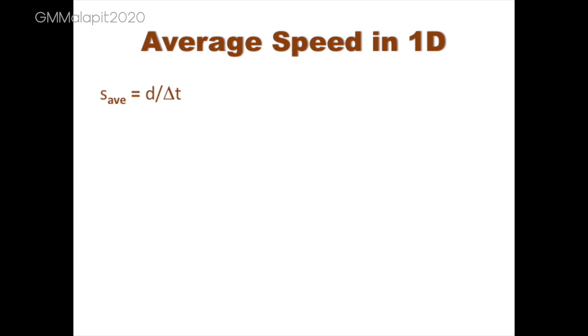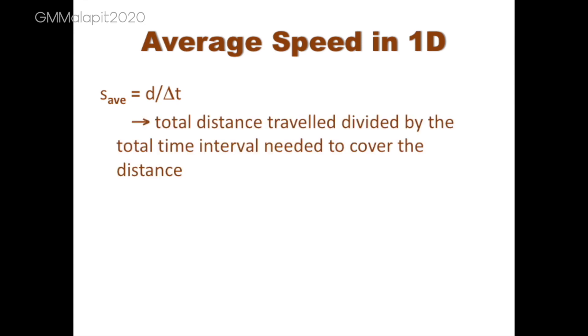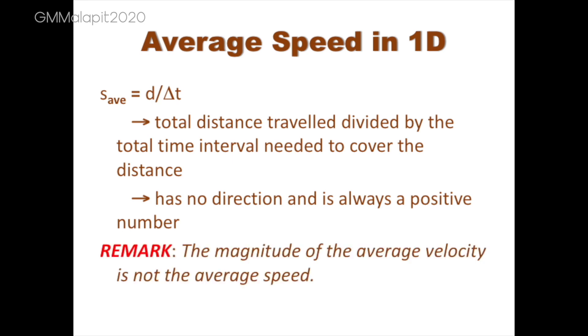The average speed is defined as the total distance traveled divided by the total time interval needed to cover the distance. It has no direction and is always a positive number. It should be noted that the magnitude of the average velocity is not the average speed.